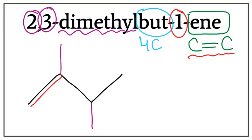This is the structure for 2,3-dimethyl bute-1-ene or 2,3-dimethyl butene. Thank you for watching and don't forget to subscribe to my channel.